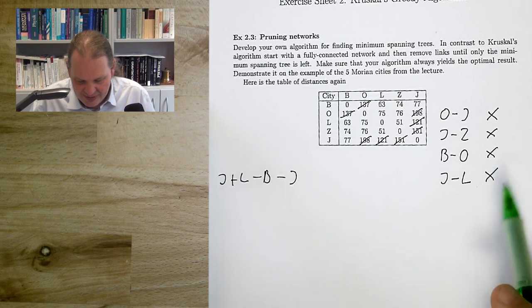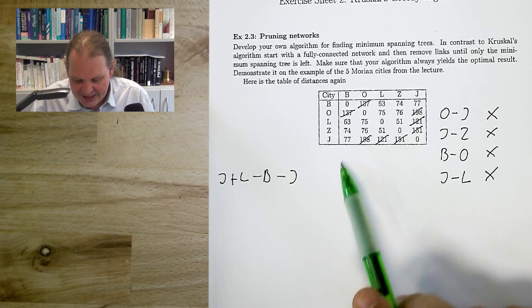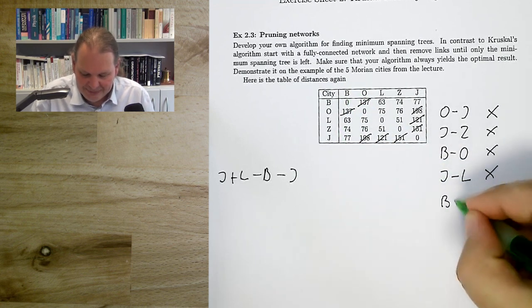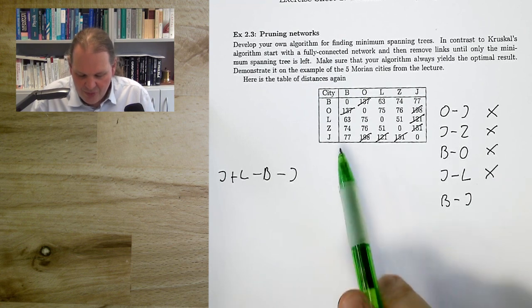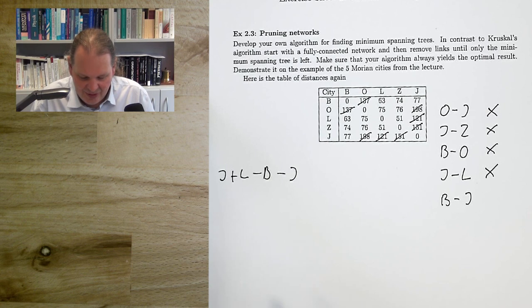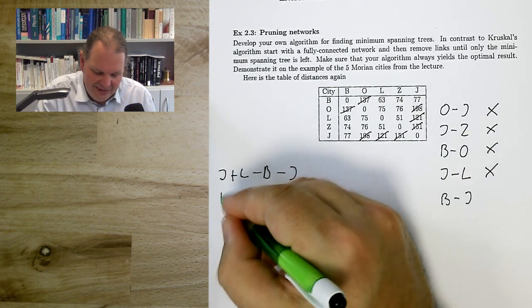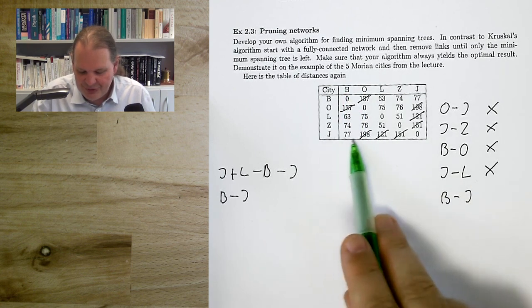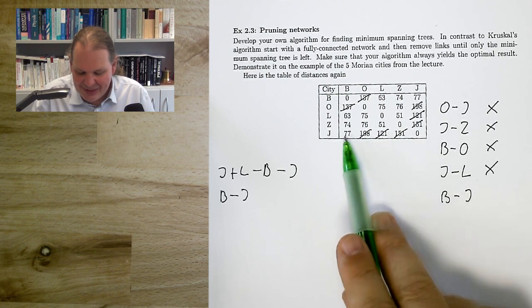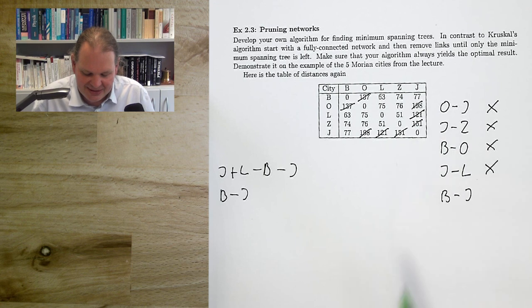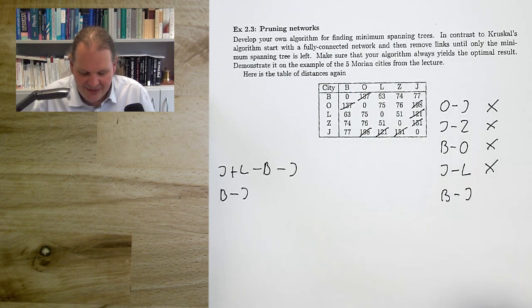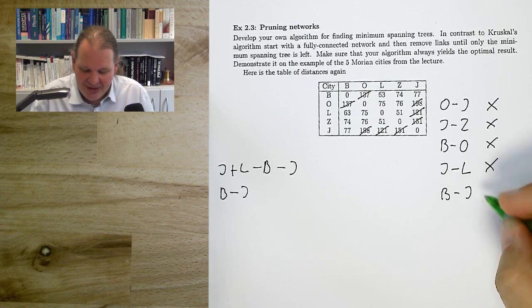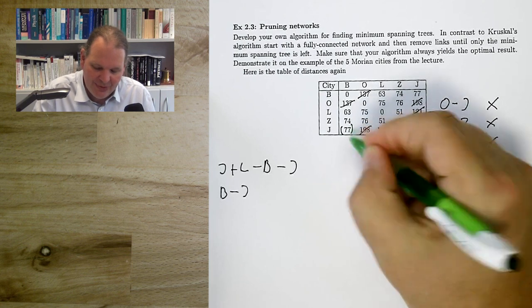Moving on to the 70s. The biggest is 77: Brno–Jihlava. If I start in Brno and go to Jihlava, from Jihlava there's no other place to go — Jihlava is now a dead end with only this one remaining link. If I disconnected this, it would break the component. So we keep Brno–Jihlava, the 77.